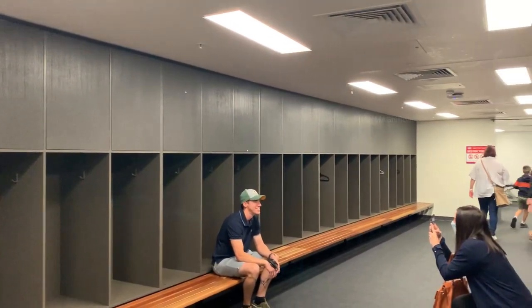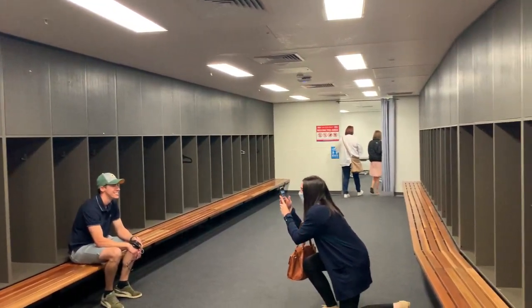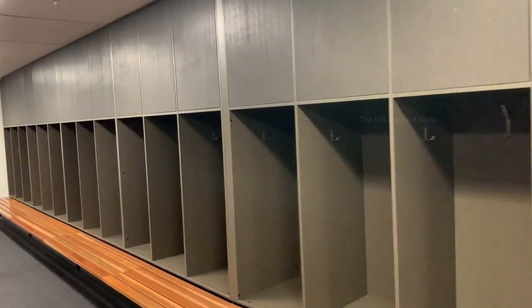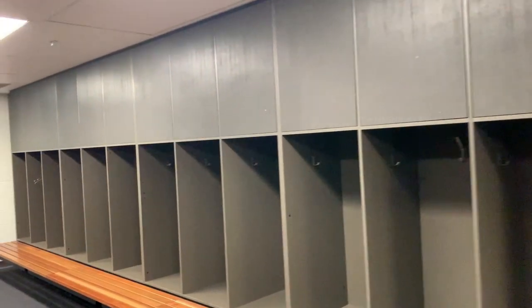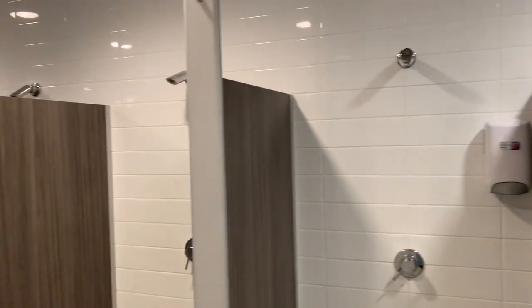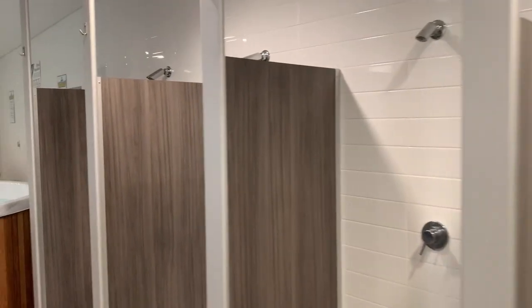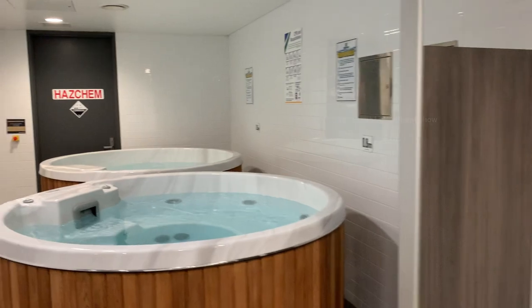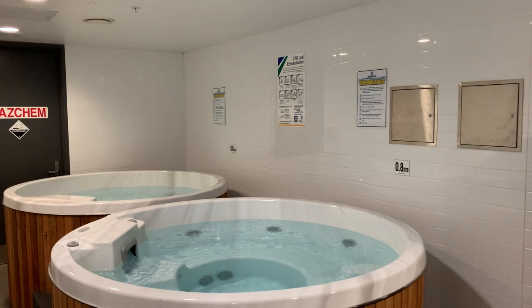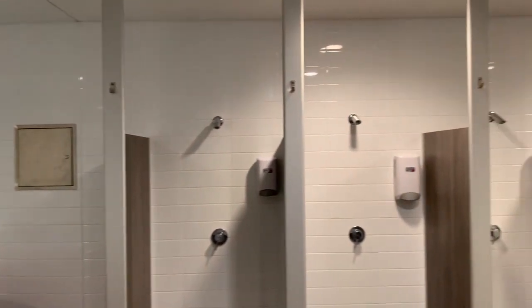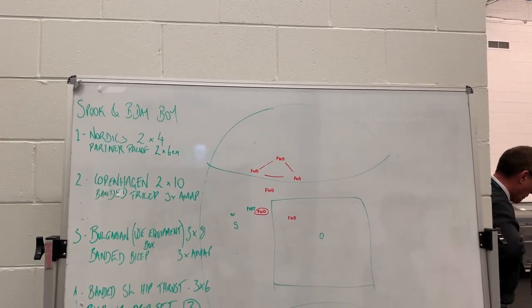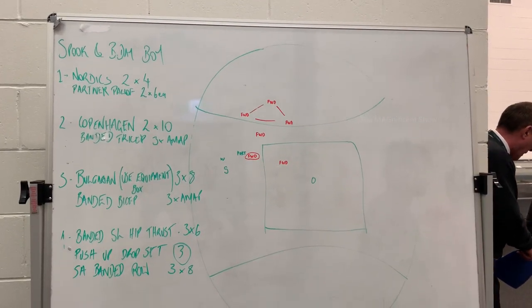When you come past that planning room, there are storage lockers for the players available on both sides. There are some showers in this section and following them you can see a couple of jacuzzis where the players can take ice baths after the game. On this whiteboard you can see a game plan from the last match played here.